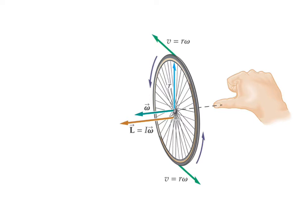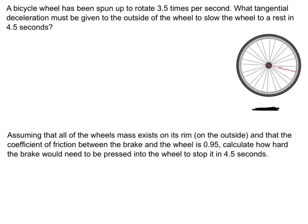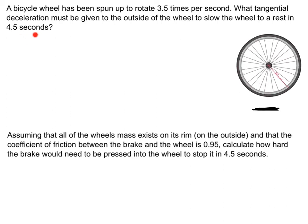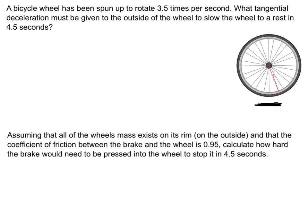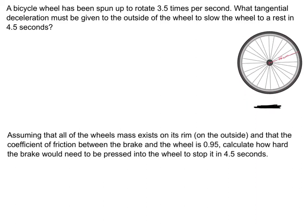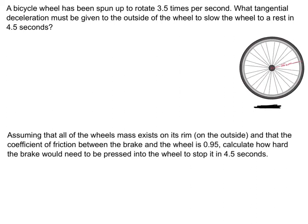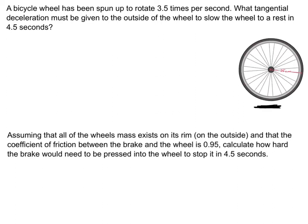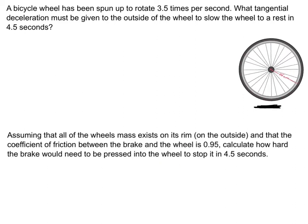We'll continue to discuss the right-hand rule in class. Now a couple of straightforward questions. A bicycle wheel has been spun up to 3.5 revolutions per second, and we want to slow it down to rest in 4.5 seconds. The question is: what tangential acceleration must it be given? We're pressing a brake pad against the bike wheel to slow it down. The wheel has a radius of 25 centimeters, and we want to find what tangential deceleration we must give it.